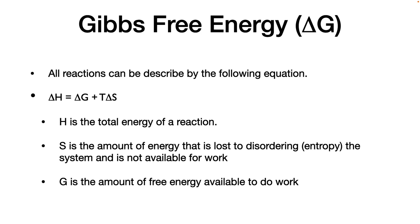The second concept is Gibbs free energy. All reactions, including biological reactions, are covered by thermodynamic principles. These reactions must satisfy the equation: delta H equals delta G plus T delta S, where H is the total energy of a reaction, S is the amount of energy lost to entropy and not available to do work, and G is the amount of free energy available to do work. Knowing the delta G of a reaction makes it possible to predict its favorability and helps us predict what reactions can actually be used to generate energy.